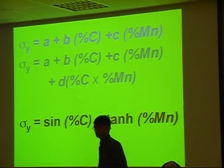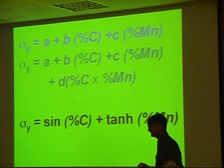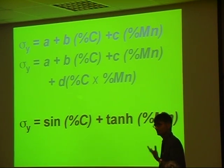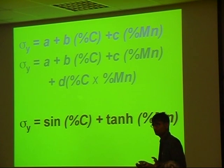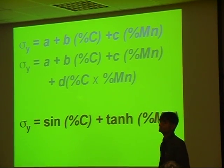That's the first problem we need to solve. What is the relationship? What is the correct relationship? We need a method where we don't need to assume the relationship, but the relationship is discovered.